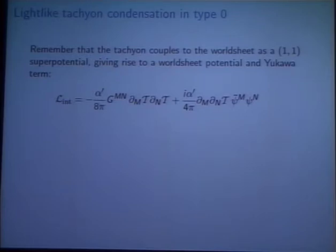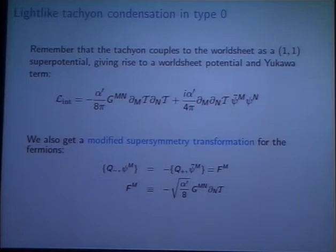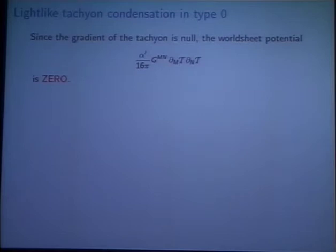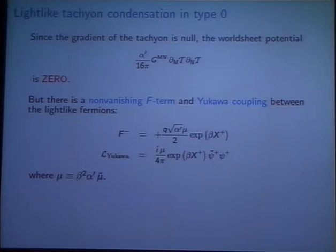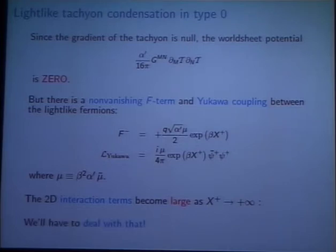So the component world-sheet Lagrangian is a potential term in general, and a Yukawa coupling, and a modified supersymmetry transformation. But in this case the potential term vanishes because the gradient of the tachyon measured with respect to the sigma model metric is 0. But the F term, the world-sheet F term, is still large, exponentially increasing, and the Yukawa coupling is exponentially increasing. So it's a rather peculiar solution. The two-dimensional interaction terms, just the Yukawa coupling, no potential, become large as we go inside the bubble. So we have to deal with that somehow. Because now all string states can get into the bubble. There's no potential expelling them, nothing even pushes them away.